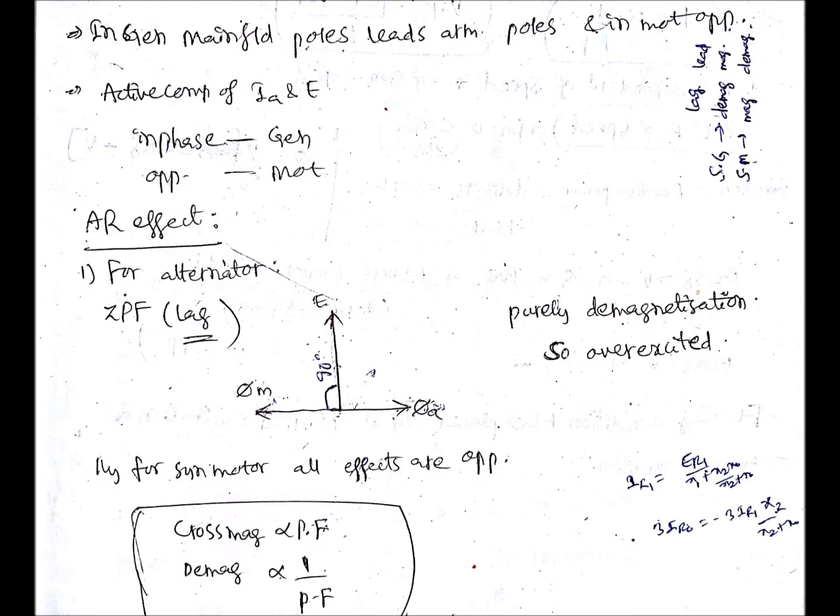We will see the armature reaction effect in case of an alternator. In a generator, the main field poles lead the armature poles, and in a motor it is the opposite. The active component of armature current Ia and the generated EMF — if they are in phase it is a generator, and if they are in opposite phase it is a motor. Now coming to the armature reaction effect for the alternator.